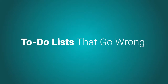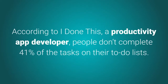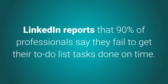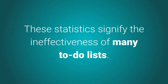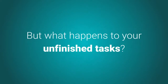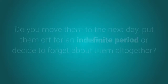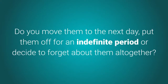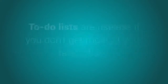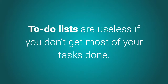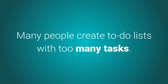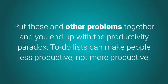To-do lists that go wrong: According to iDoneThis, a productivity app developer, people don't complete 41% of the tasks on their to-do lists. LinkedIn reports that 90% of professionals say they fail to get their to-do list tasks done on time. These statistics signify the ineffectiveness of many to-do lists. What happens to your unfinished tasks — do you move them to the next day, put them off indefinitely, or forget about them altogether? To-do lists are useless if you don't get most of your tasks done. Many people create to-do lists with too many tasks, leading to the productivity paradox.